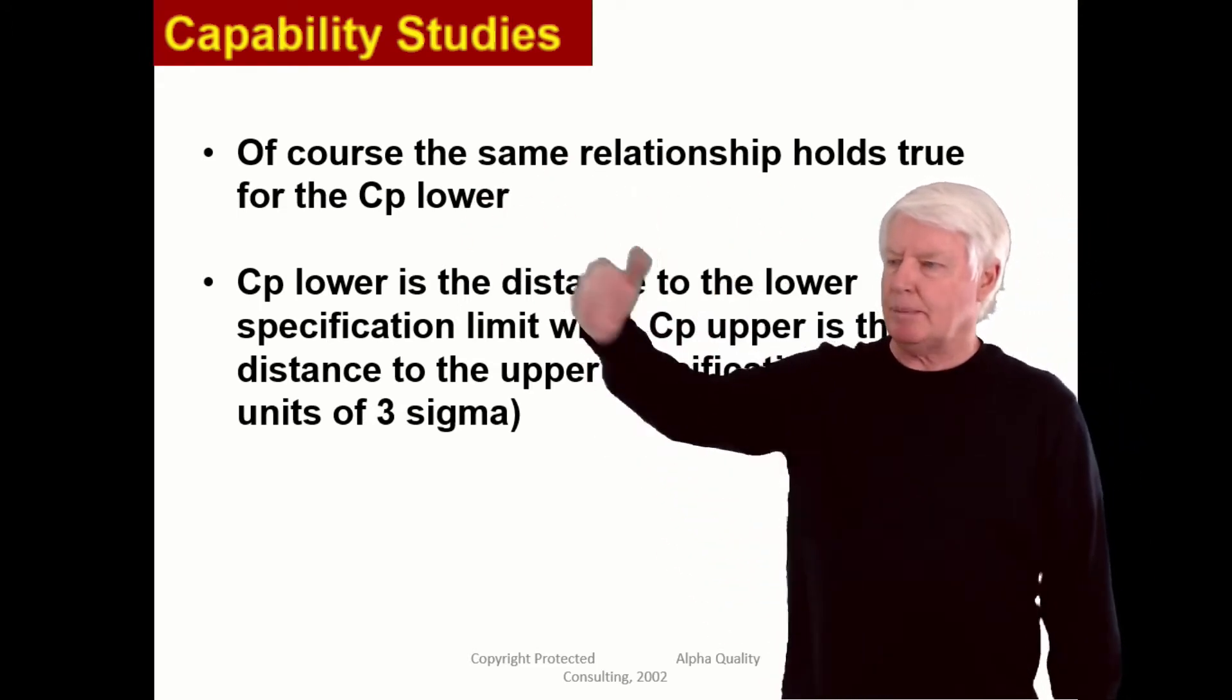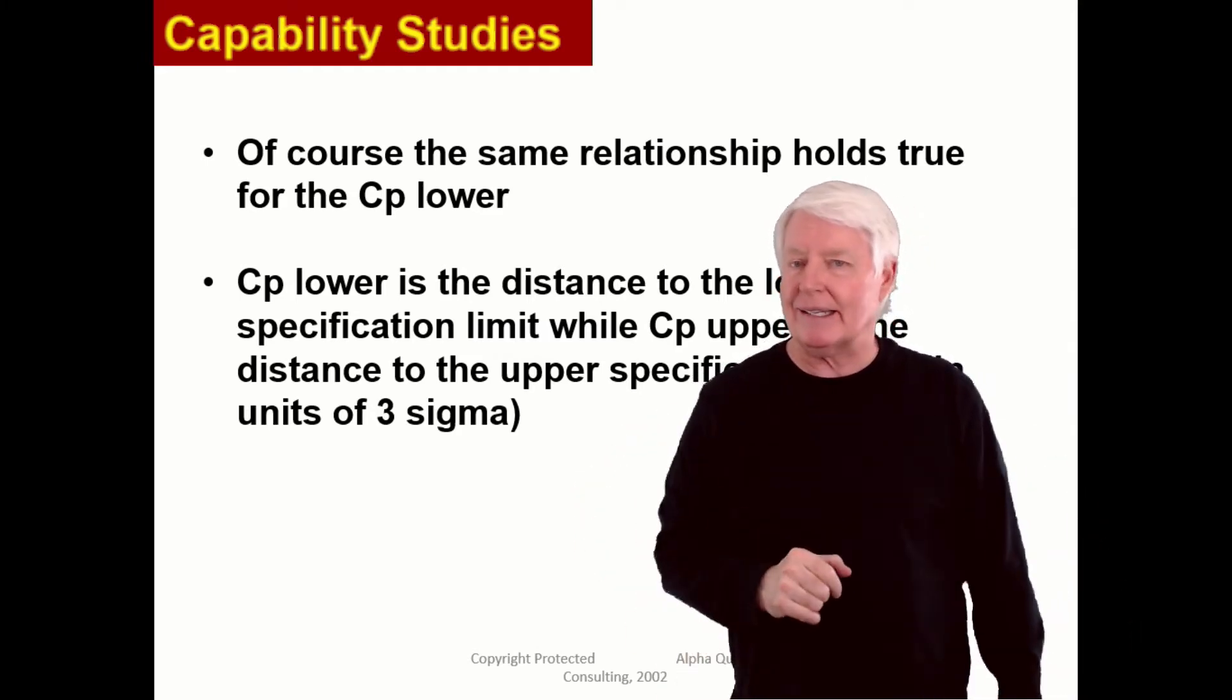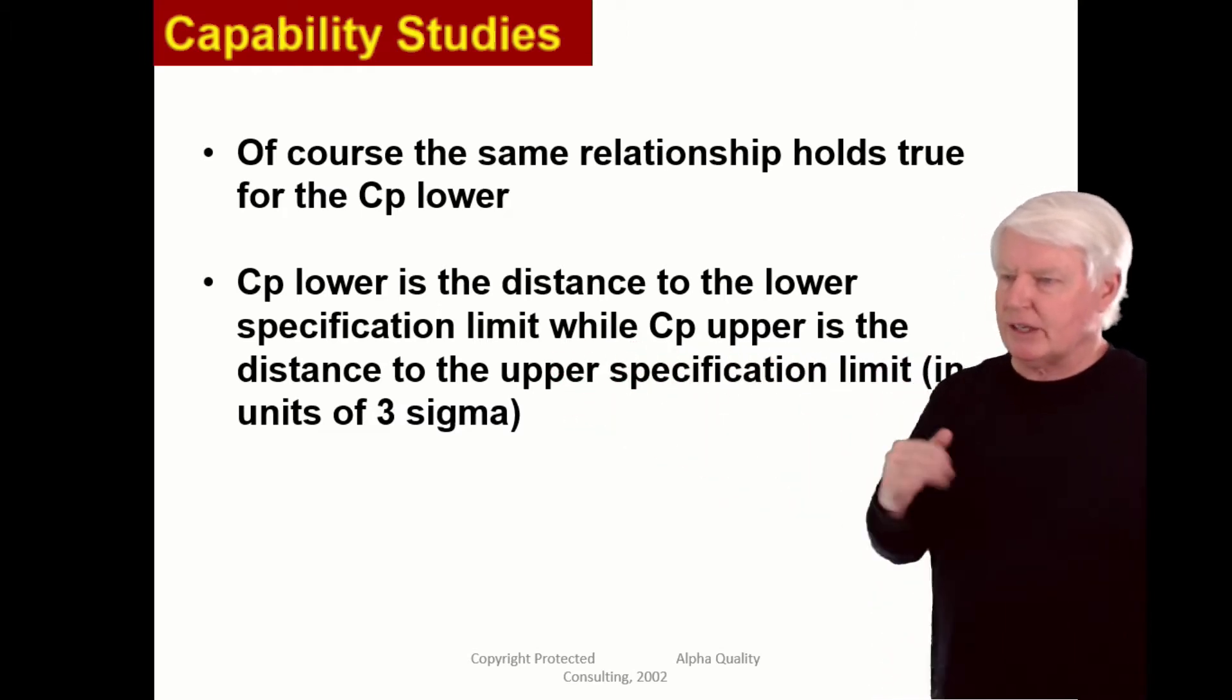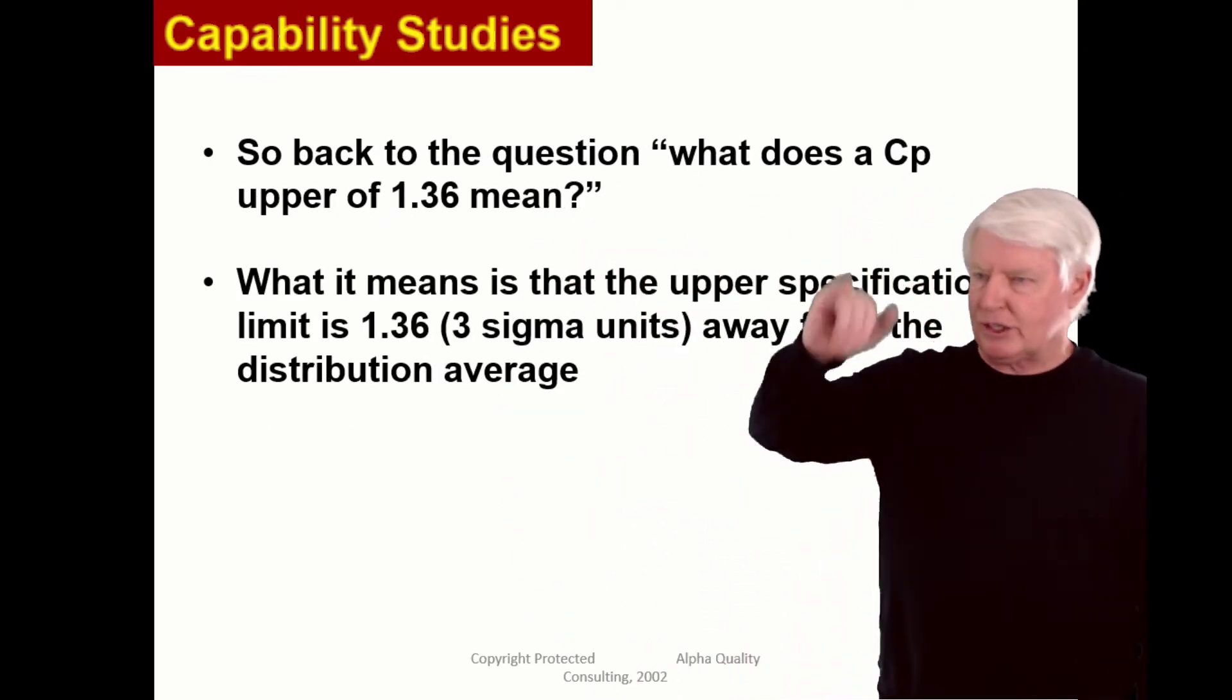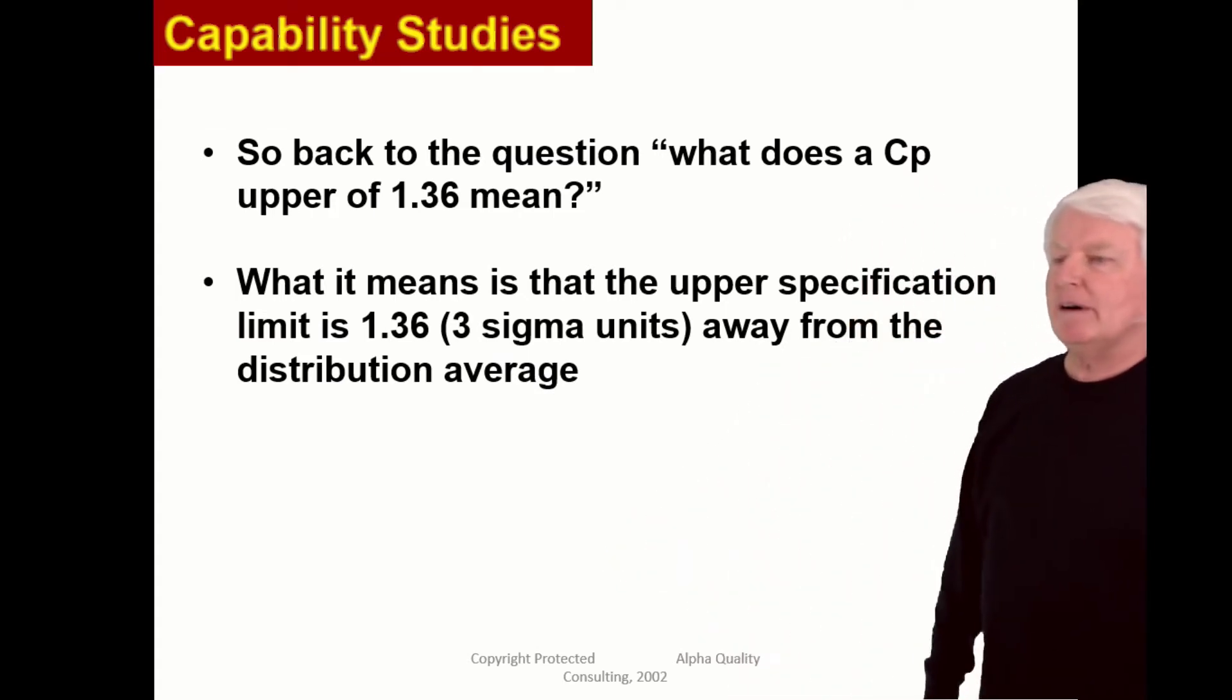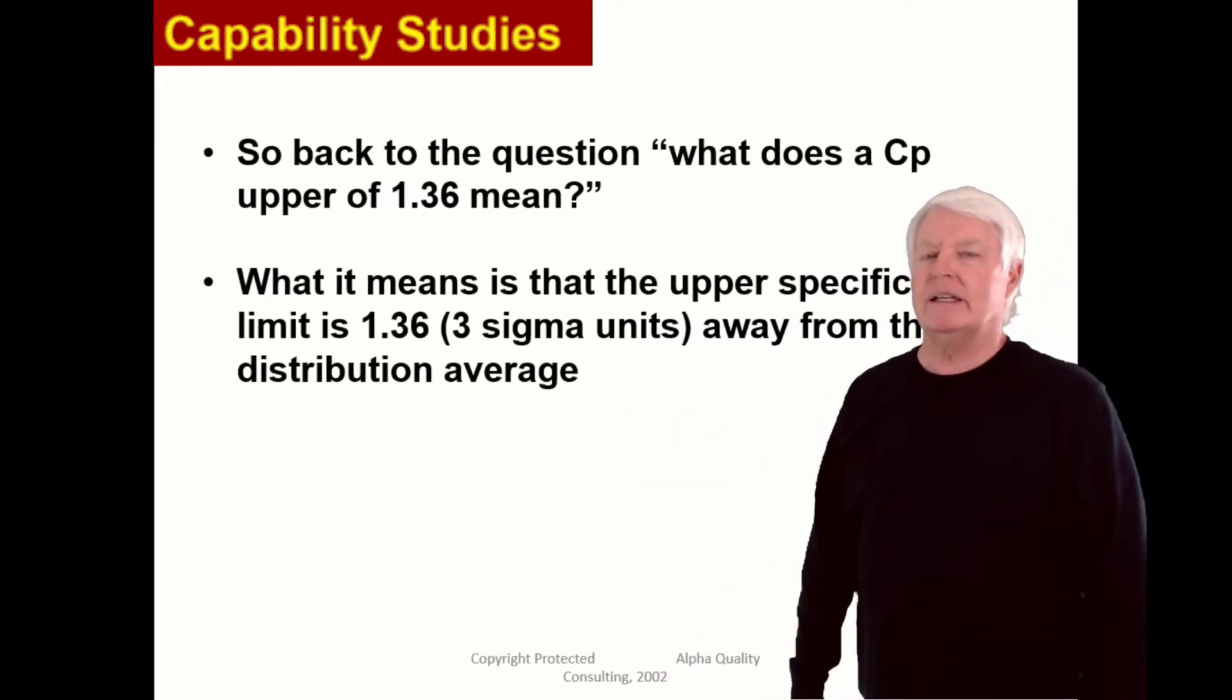Of course, the same relationship holds true for CP lower. CP lower is the distance to the lower specification limit from the average, because we're always measuring distance in statistics, and we always measure from the average. CP lower is the distance to the lower specification limit from the average, while CP upper is the distance to the upper specification. Remember, we're always measuring in units of three sigma. So what does CP upper of 1.36 mean? It means that the upper specification limit is 1.36 three sigma units away from the distribution average. You could also say it's 136% of the three sigma unit.